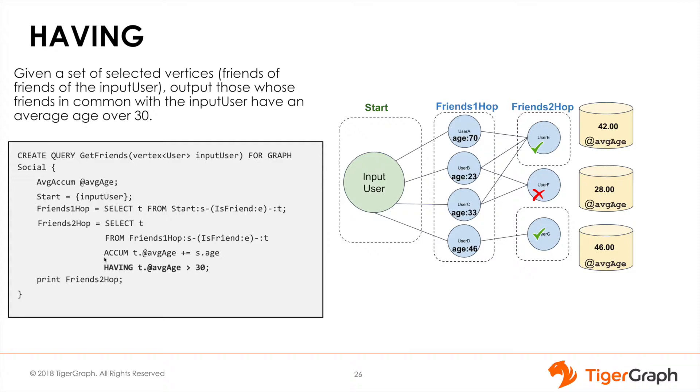Using the HAVING clause, we check the values of the average accumulator for each vertex, only storing those who have a value greater than 30. As you can see using the graph on the right, only user E and user G, both of which have an average accumulator greater than 30, are selected.